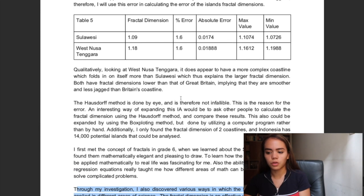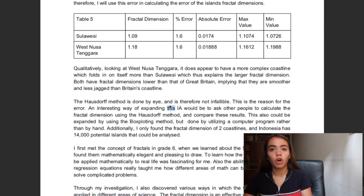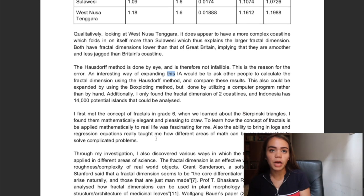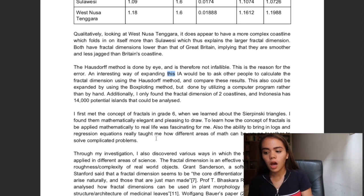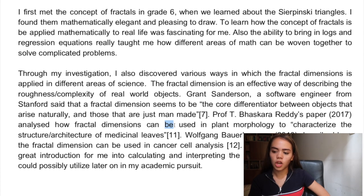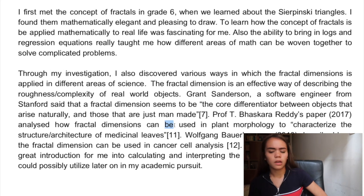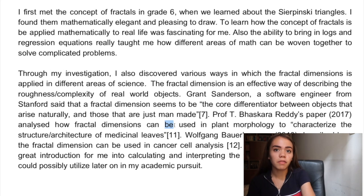Then I do the basic discussion and conclusion, where I talk about the problems with my IA, the issues, why it's not perfect, why I didn't get exactly the right amount. And especially at the end, I talked about what I could do better, why I did this IA, why I find it interesting, and then I gave a whole paragraph showing how fractal dimensions can be used in other scientific domains — not just mathematics, but also for cancer cells and all kinds of stuff — to show different applications of the fractal dimension and give my IA relevance and show why it's important.